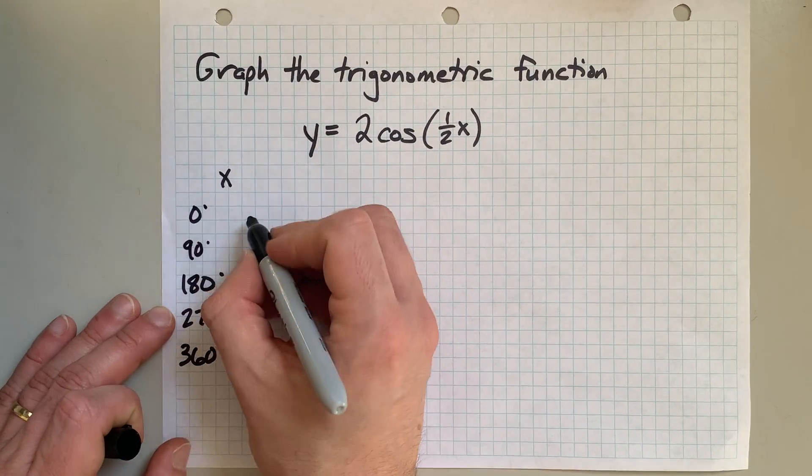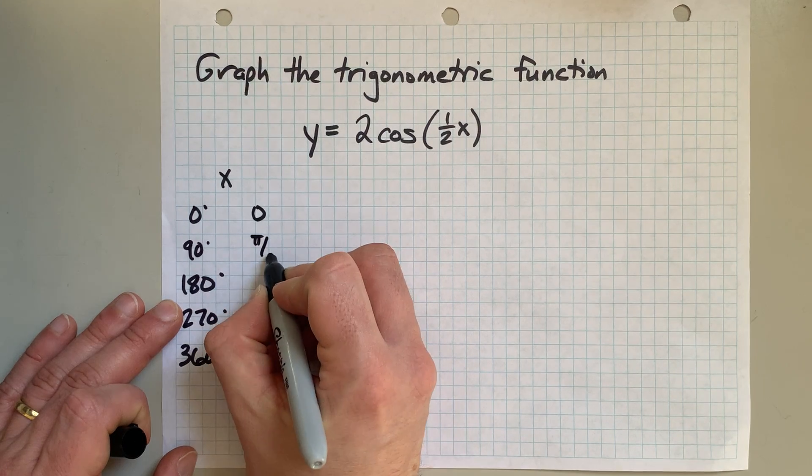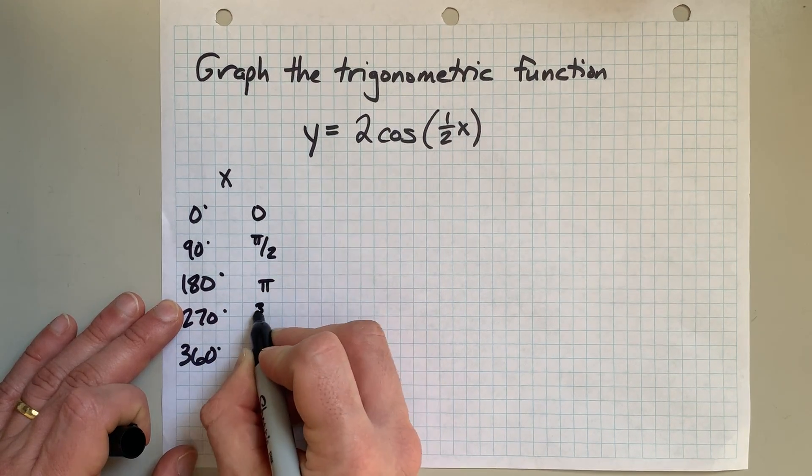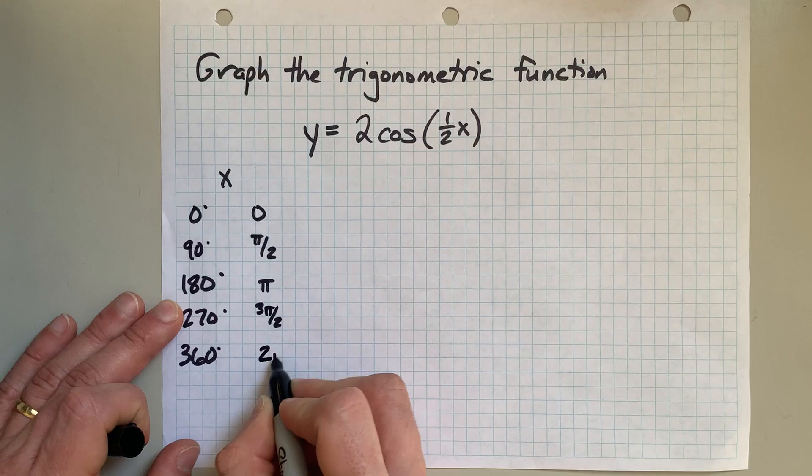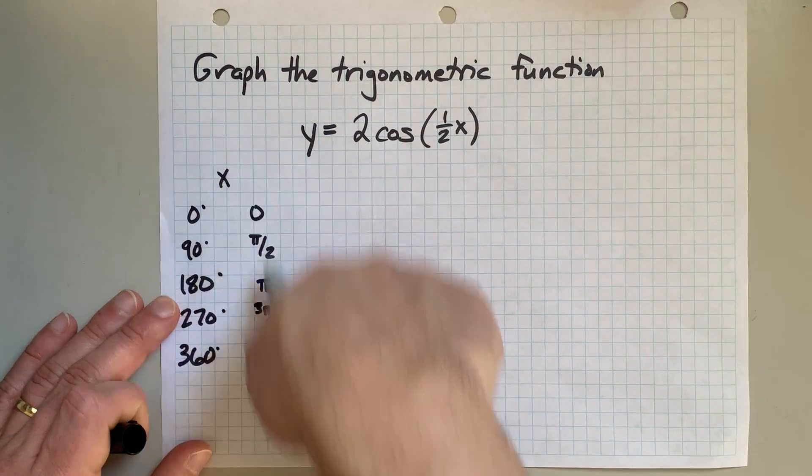And just in case your teacher uses radians, I'm going to put numbers in radians here as well. This is 0, pi over 2, pi, 3 pi over 2, and 2 pi. Use whichever of these you're most familiar with in terms of measuring angles.